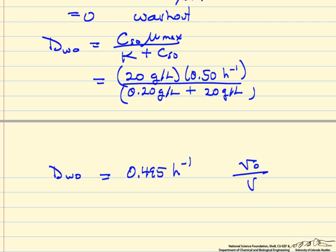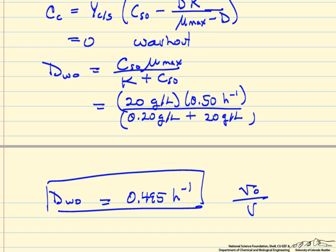Volumetric flow rate divided by volume should have units of inverse time. So at this dilution rate, we're going to wash all of the cells out of the reactor.